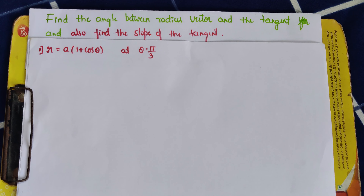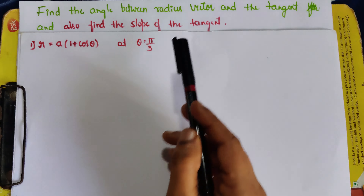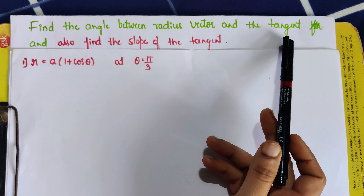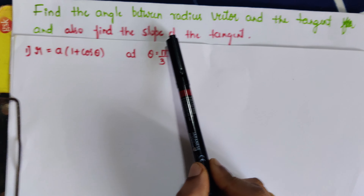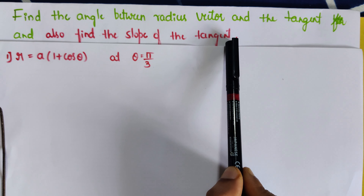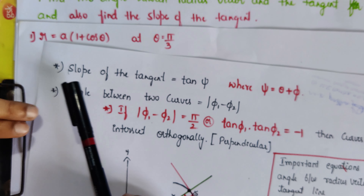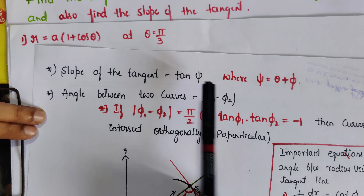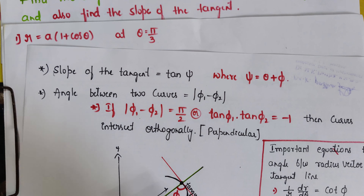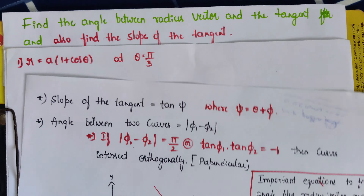Hi everyone. In my last video I explained how to find the angle between the radius vector and the tangent. In this video I am going to teach you how to find the slope of the tangent. To find the slope of the tangent we have the formula: slope of the tangent equals tan(ξ), where ξ equals θ + φ. Using this formula I am going to solve the given questions.